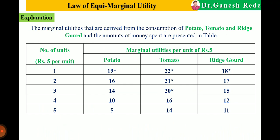The marginal utilities derived from the consumption of potato, tomato, and ridge gourd are presented in a table. There are 5 units since the price is 5 rupees each and total money is 25 rupees. The marginal utilities for potato are 19, 16, 14, 10, 5; for tomato are 22, 21, 20, 16, 14; and for ridge gourd are 18, 17, 15, 12, 11 — all measured in utils.